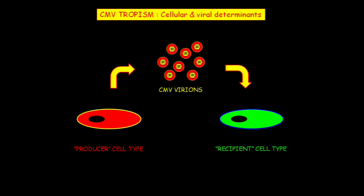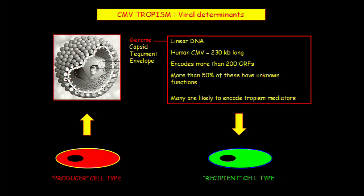Just a quick view of the genome. The genome is linear DNA and is huge — it encodes more than 200 open reading frames. New ones are being found continually, and many still have unknown functions. Most are thought to be immunomodulators or tropism mediators. There's still quite a bit left to discover.